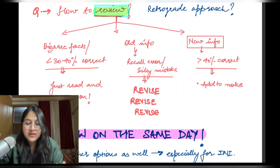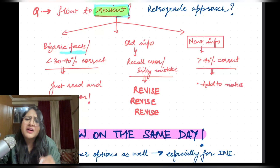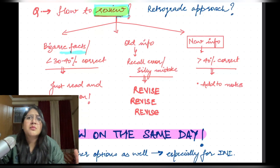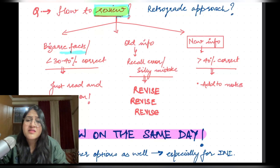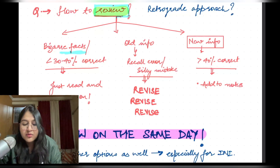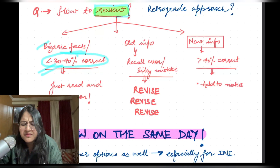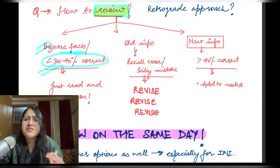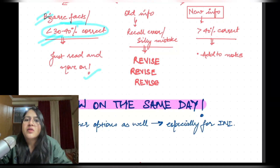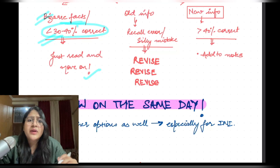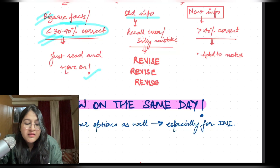Mistakes are divided into three types. First: bizarre questions — for example, a gene mutation, a percentage in PSM, some latest guideline statistics. Check how many people are getting it correct. If less than 30 to 40 percent are correct, or it's some very random mutation or gene, just read it with an open mind and move on. You do not need to remember it or write it down anywhere.